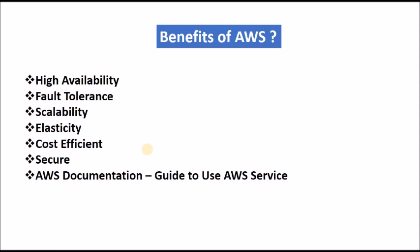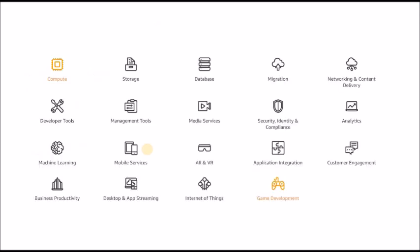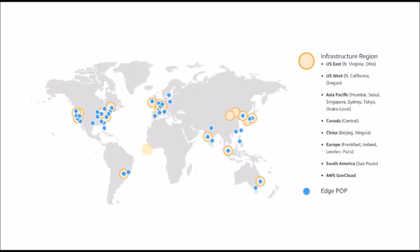These are the various services that Amazon provides. Under Compute, we have Lambda, EC2, and Elastic Beanstalk. Under Storage, we have S3 and Glacier. Under Database, we have DynamoDB and RDS. There are a lot of services which we are going to see in detail.